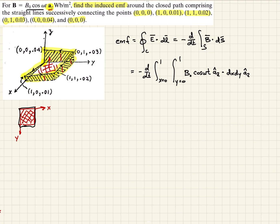The âz dotted with âz gives us one, so these cancel due to the dot product. Our function is not dependent on X or Y, so when we take these two integrals, we are left with -d/dt of xy cos(ωt) evaluated from x=0 to 1 and y=0 to 1.